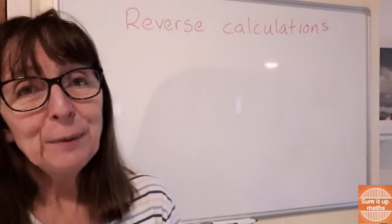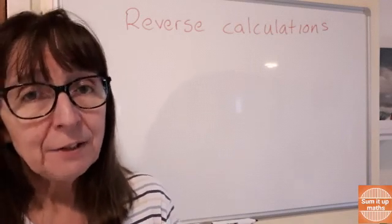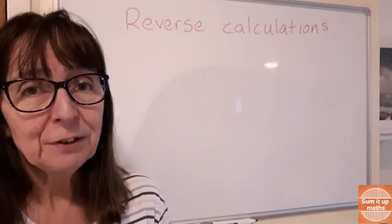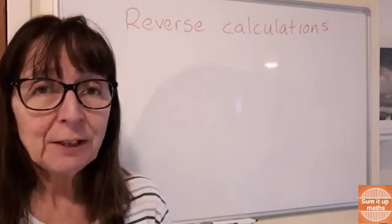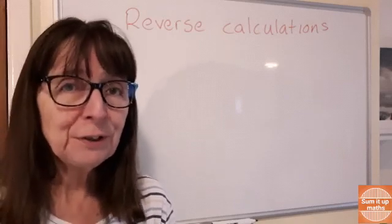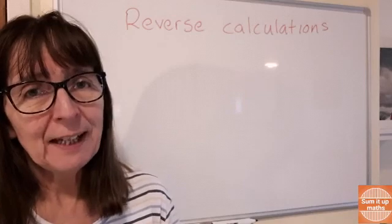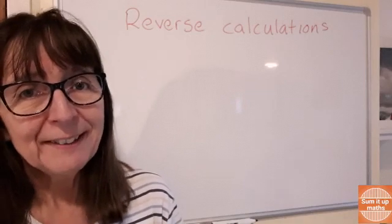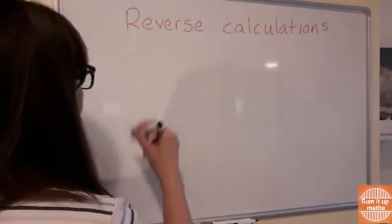I'm going to show you how we would do a reverse calculation. What happens is we get to the end of our sum and we want to check it's correct, so we do the opposite in order to check that we get to our original start of the sum. We're going backwards to check that everything works out the same as it should do.